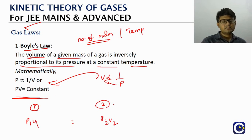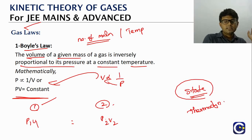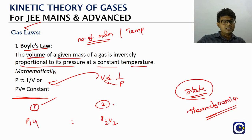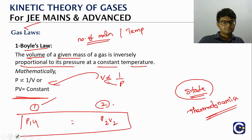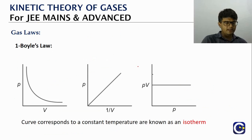For two states of a gas under Boyle's law: P₁V₁ = P₂V₂. A 'state' represents the values of the gas parameters. Since temperature is maintained constant in Boyle's law, this is also referred to as an isothermal process. The corresponding graphs are called isotherms — 'iso' refers to constant, here constant temperature.